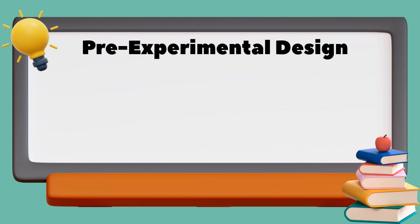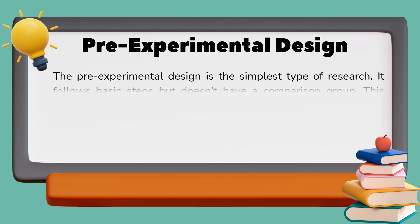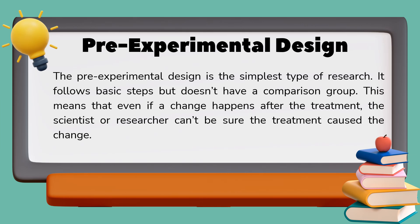In pre-experimental design, this is like a test run or trial experiment to see if an idea might work. Scientists or researchers make a change and see what happens with one group. It is the simplest type of research — it follows basic steps but doesn't have a comparison group. This means even if a change happens after the treatment, the researcher can't be sure the treatment caused it.